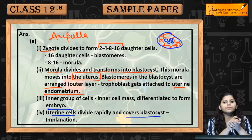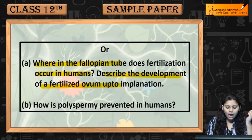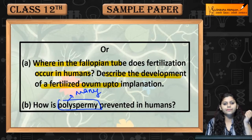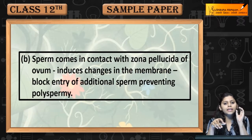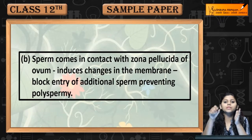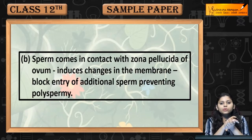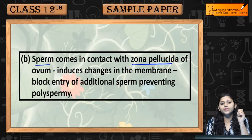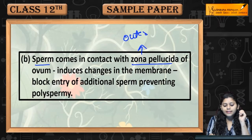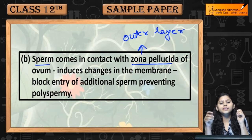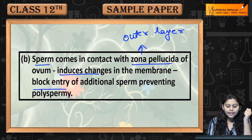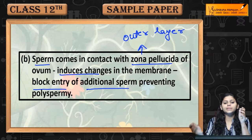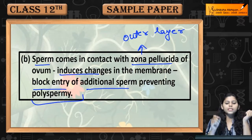Uterine cells cover karengi blastocyst ko — this is implantation. Next: how is polyspermy prevented in humans? Bahut sare sperms form hote hain taaki fertilize kar sake. Hameesha dekha gaya hai agar ek sperm fertilize kar de to baki sperms fertilize nahi kar pate. Sperms come in contact with zona pellucida of ovum — zona pellucida outermost layer hai ovum ki. Jaisa hi sperm iske contact mein aata hai, it will induce changes in the membrane jo block karengi entry of additional sperms. Aisa hi prevent karte hain polyspermy ko.